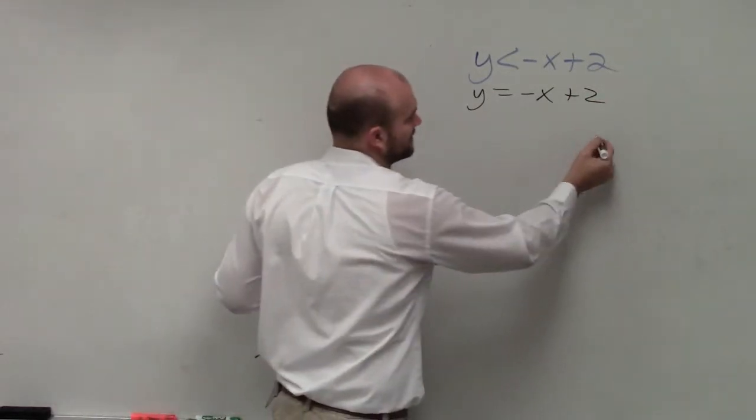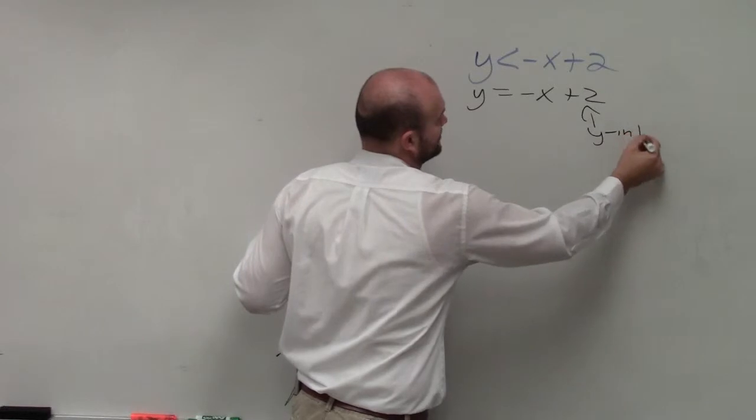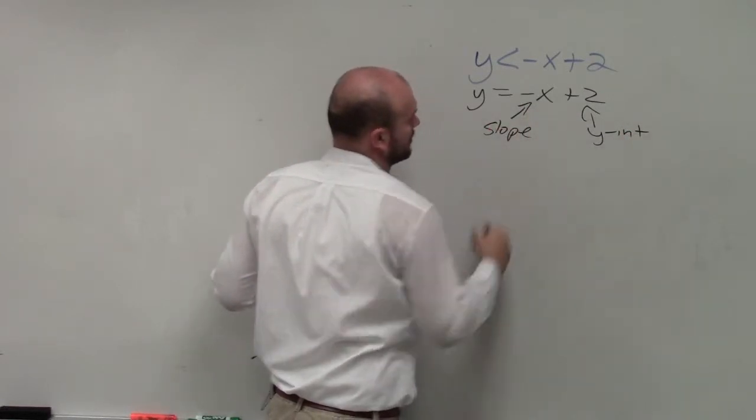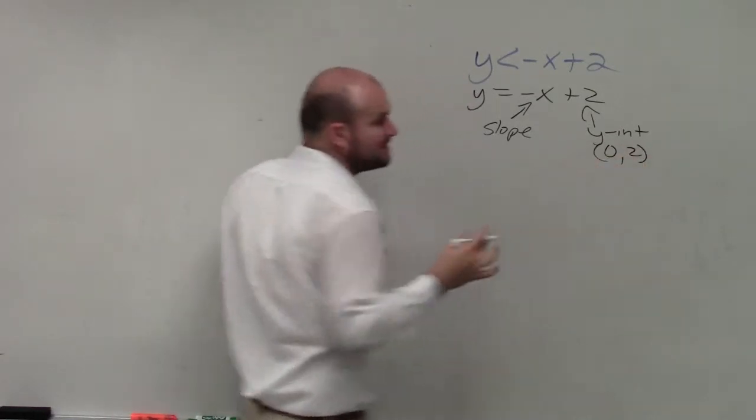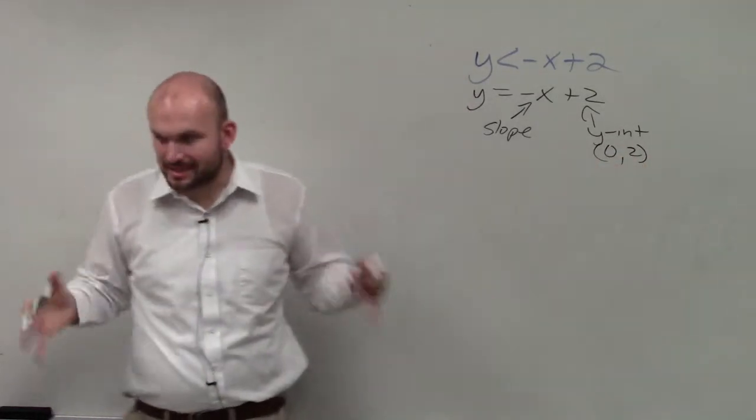Therefore, when we're graphing this, we want to identify the y-intercept and the slope. The y-intercept is 2, which is a coordinate point. Please understand that the y-intercept is a point.